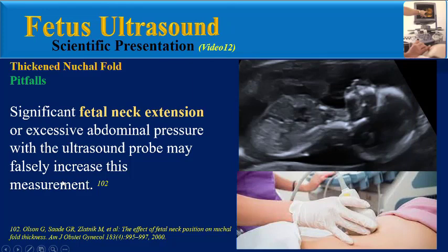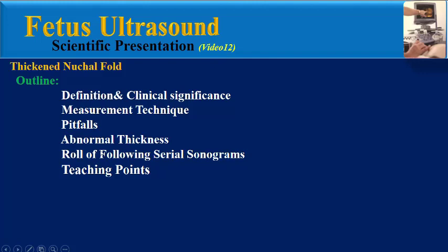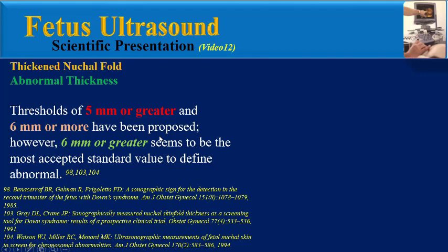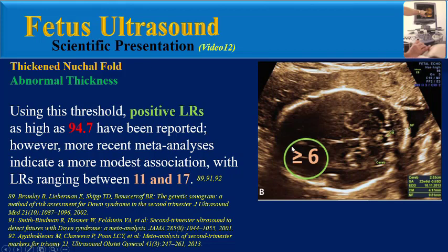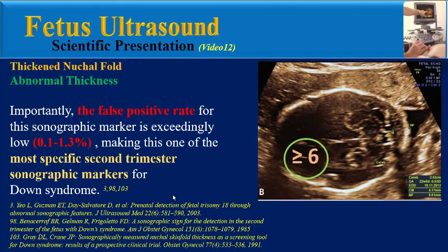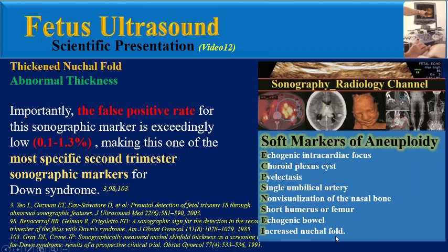What is the abnormal thickness in nuchal fold measurement? Thresholds of 5 mm or greater and 6 mm or more have been proposed. However, 6 mm or greater seems to be the most accepted standard value to define abnormal. By using this threshold, positive likelihood ratios as high as 95 have been reported. However, more recent meta-analyses indicate a more modest association, with likelihood ratios ranging between 11 and 17. Importantly, the false positive rate for this sonographic marker is exceedingly low, making this one of the most specific second trimester sonographic markers for Down syndrome.